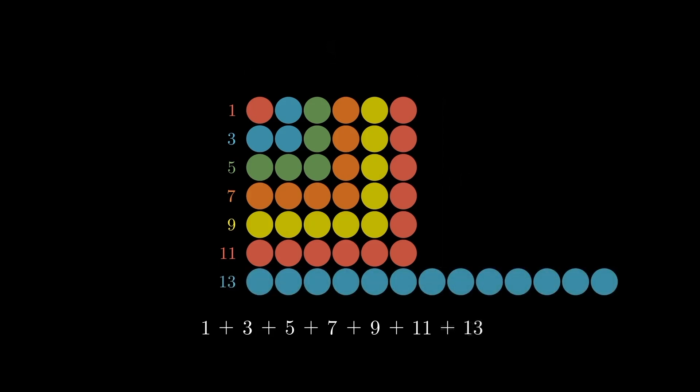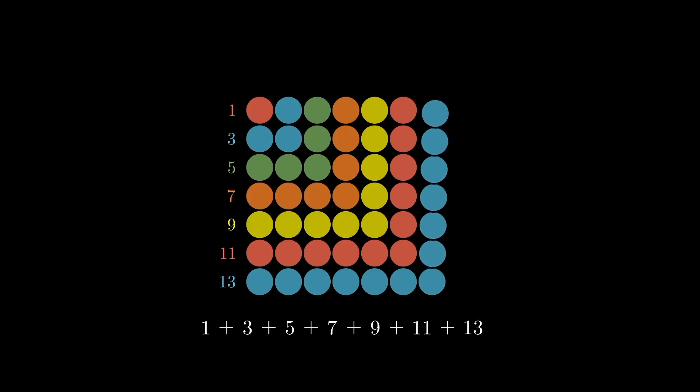So the sum of the first few odd numbers will always be a perfect square. Now, can you find the sum of the first few even numbers?